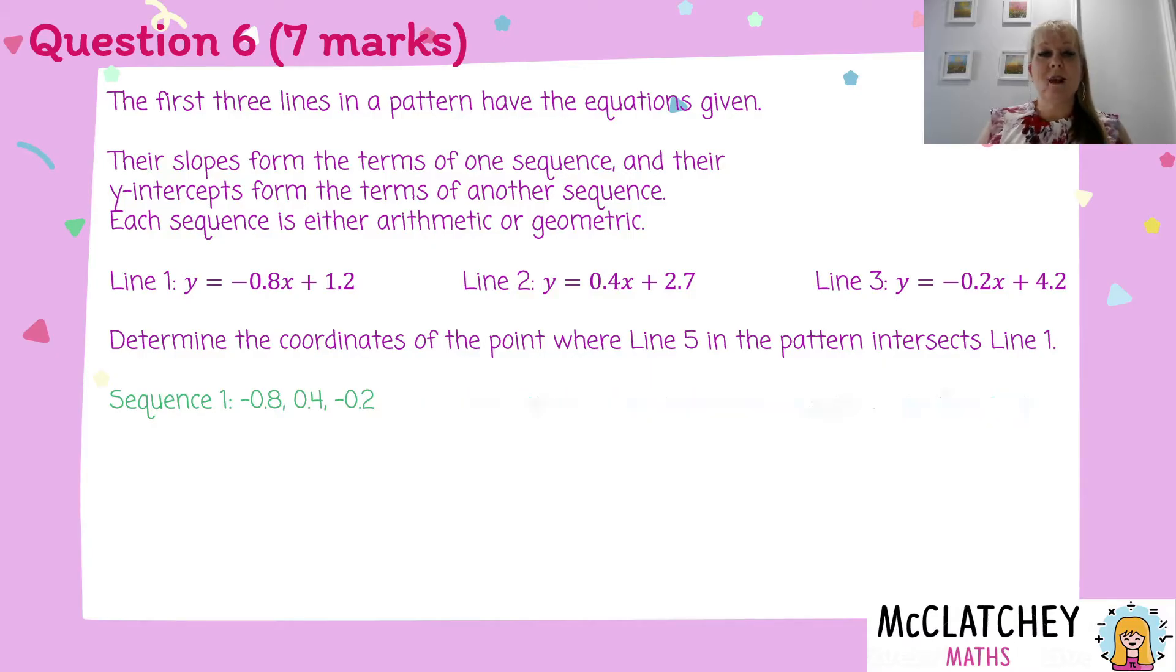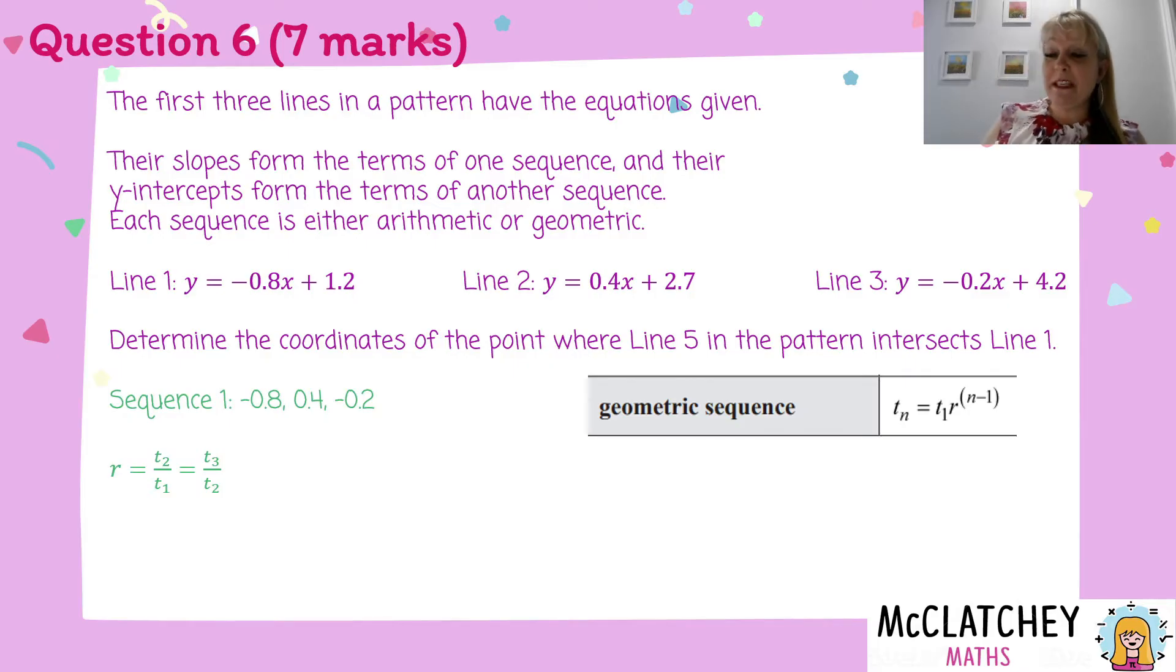So now what we're going to do is use our formula for a geometric sequence and work out that common ratio between those. So our common ratio will be term 2 divided by term 1 will be equal to term 3 divided by term 2, and so on. So that helps us then to work out what that common ratio is.